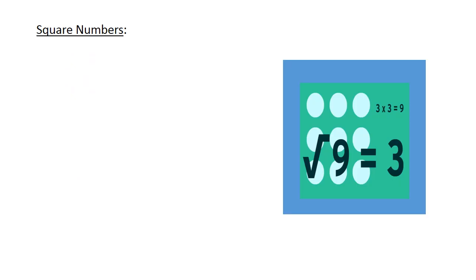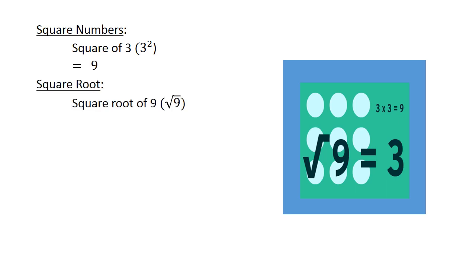Square numbers: the square of 3 equals 9. The square root of 9 equals 3.